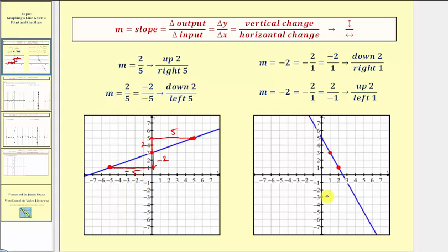In this example, the slope is negative two. We always want the slope in fraction form, so we write negative two as negative two over one, which tells us from the given point we would go down two and right one. Notice how if we go down two and right one, we find a second point on the line.